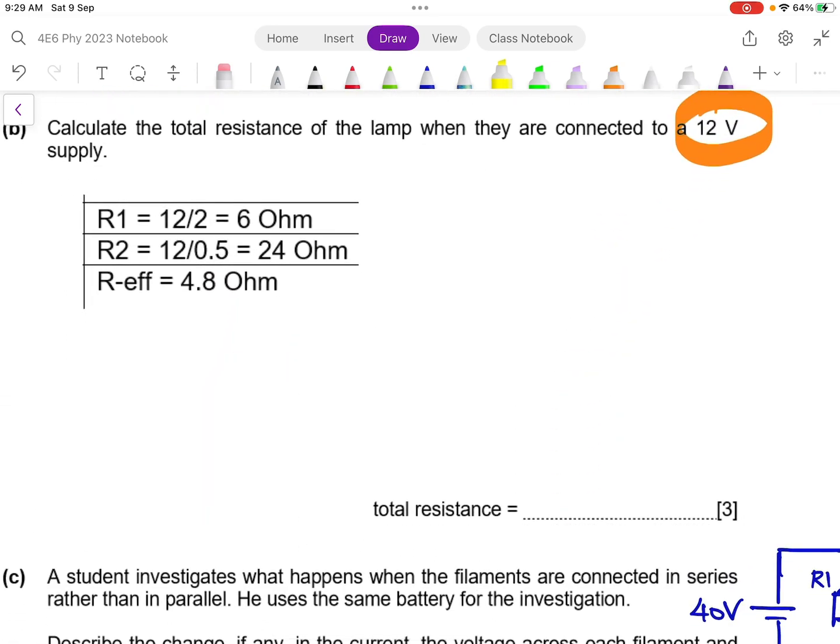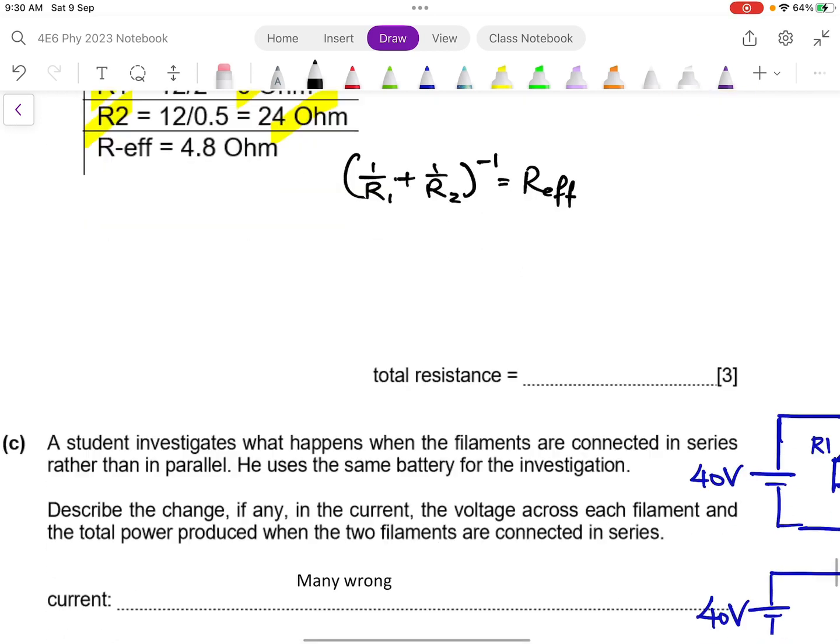So if you put in the numbers, you will be able to find out that at 12 volt, the resistance of filament 1 and 2 are as such. And because they are connected in parallel, you can apply the parallel resistance formula to get the R effective. So that's the easiest 3 marks in the entire paper.